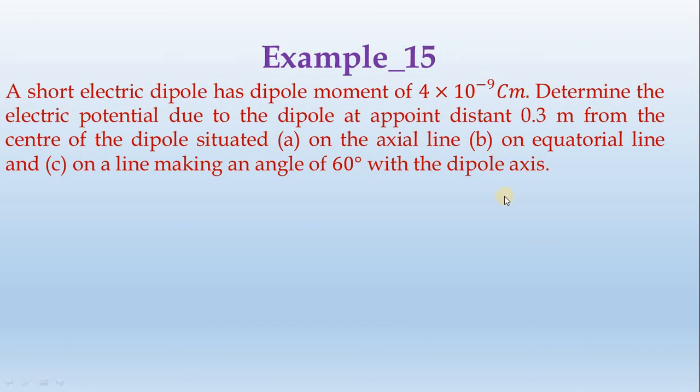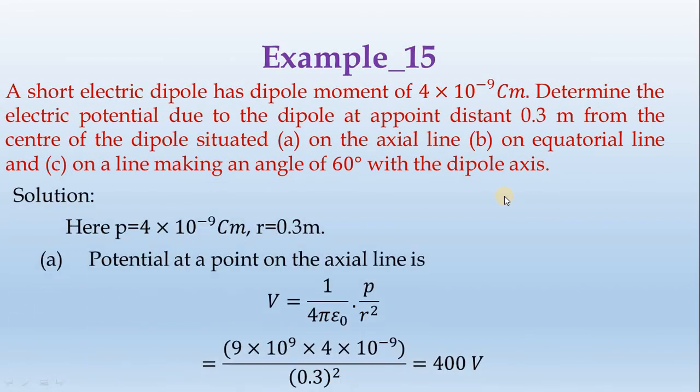We know how to relate the potential and dipole moment. V equals 1 divided by 4π epsilon naught, P divided by R squared. This is the formula. R value is 0.3 meters, and we will substitute the values.